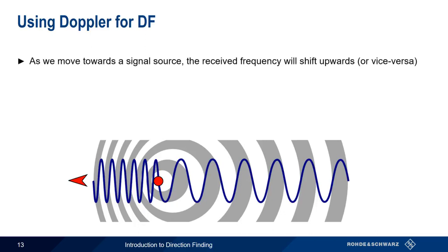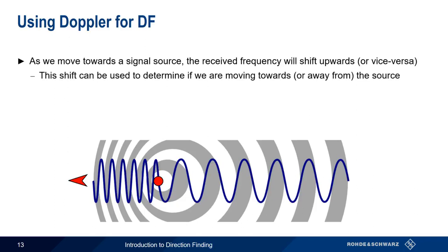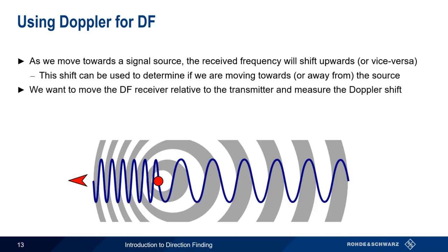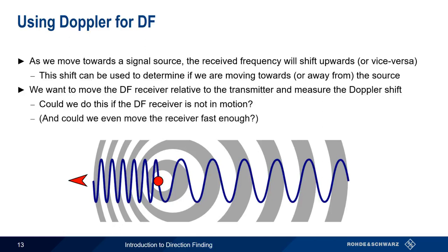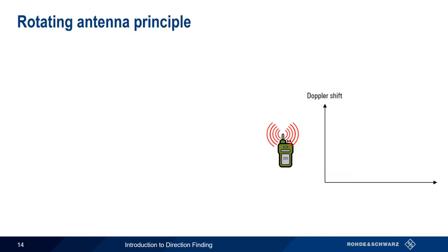If we move towards a signal source, the received frequency of the signal will shift upwards. If we move away from the signal source, the received frequency will move downwards. If we are able to detect and measure this shift, we could then determine whether we are moving towards or away from the signal source — that is, we could obtain a bearing. So in order to use Doppler shift for direction finding, we need to find a way to move our antenna in such a way that we can generate and measure a Doppler shift. There are a couple of problems with this approach. First, since our target may be stationary, we would have to move the receiver to guarantee a Doppler shift is present. And even if this were possible, could we move the receiver fast enough to create a measurable Doppler shift?